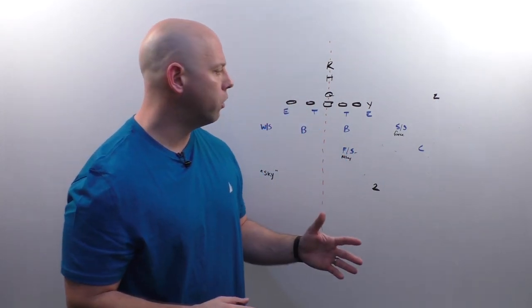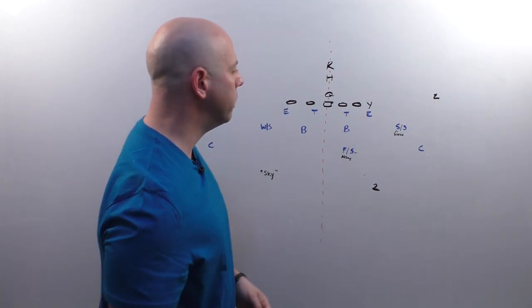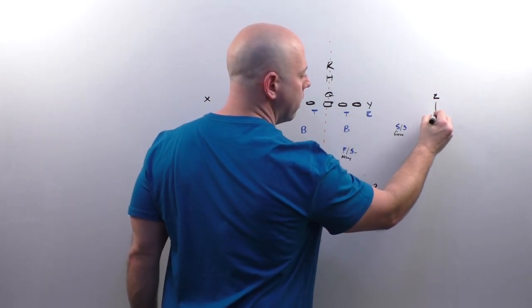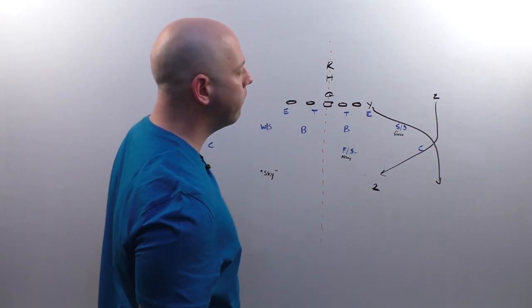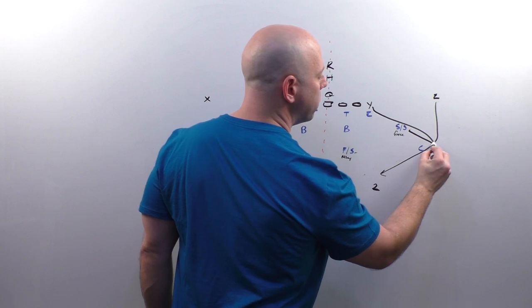I do not really want him to run with the wheel route. So if we got a post wheel, something like that, our strong safety will be running with the flat, our corner will be over top here, and he's going to recognize the wheel.